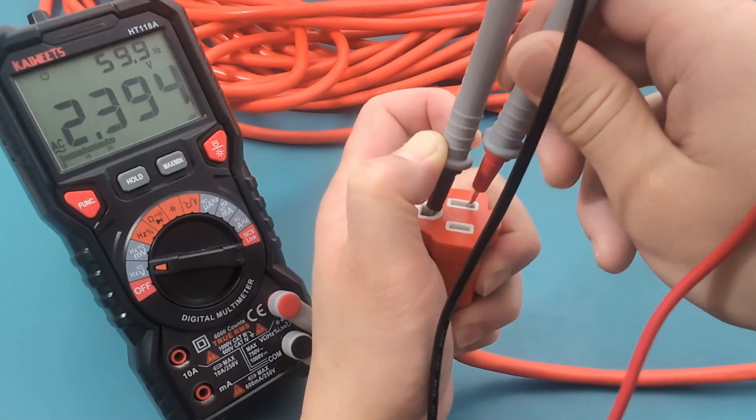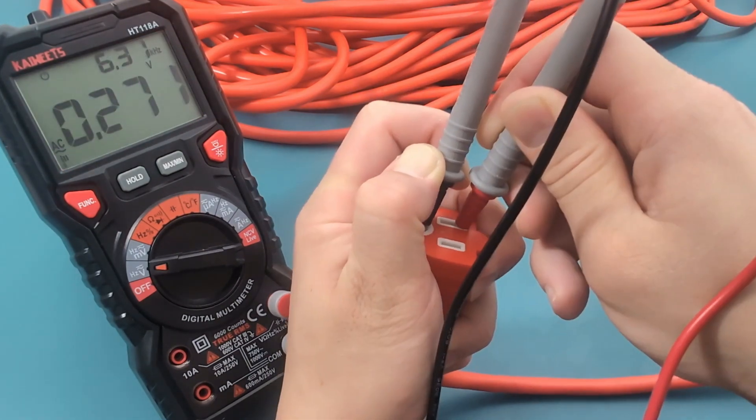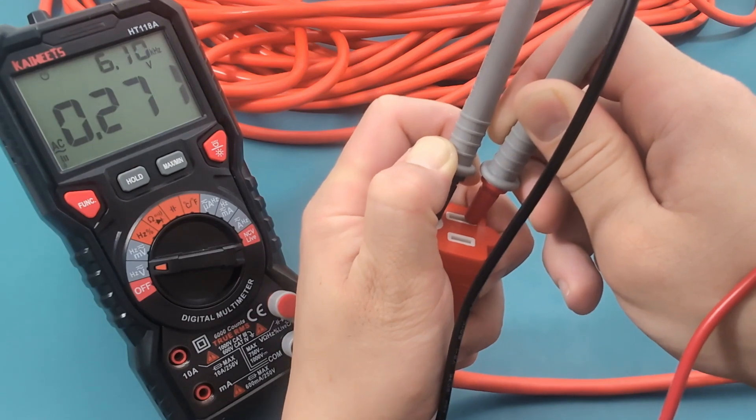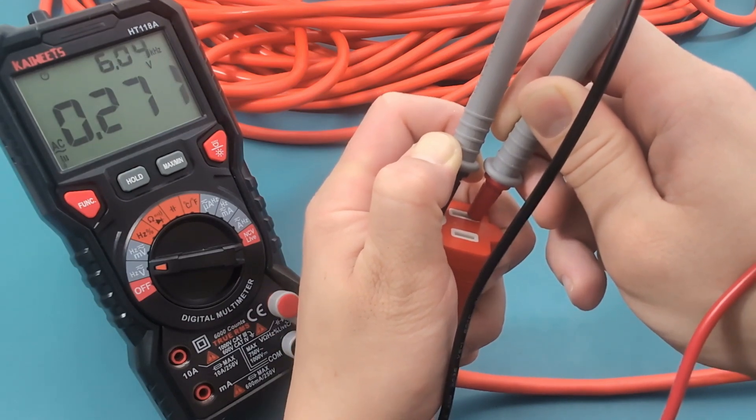Insert the red probe into the neutral slot. The reading shows a low voltage, which is what we expected.